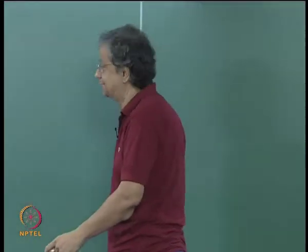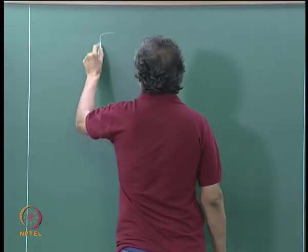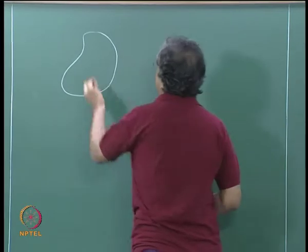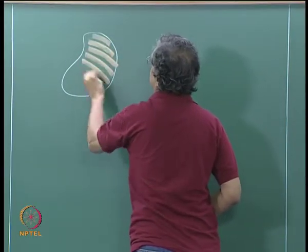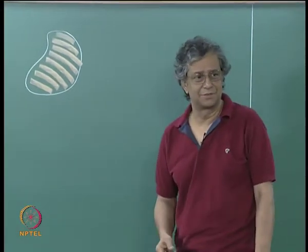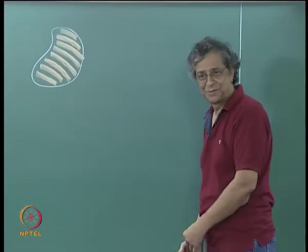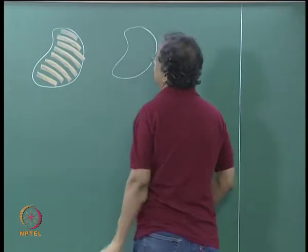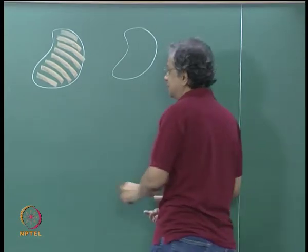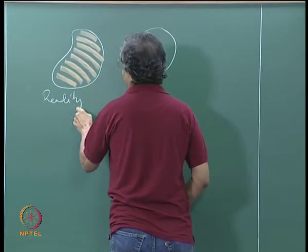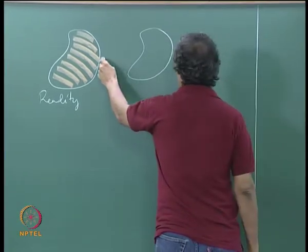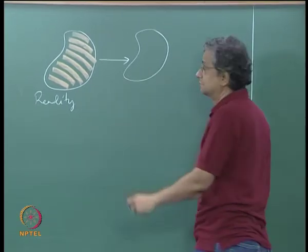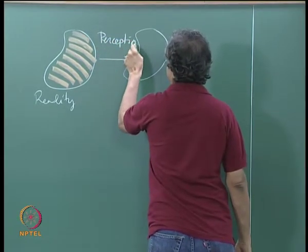Just to give the big picture graphically: on the one hand, there is reality — what we are trying to model as it is. And from reality there is perception — this is what we see.